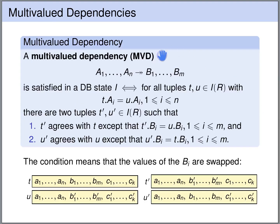In general, a multivalued dependency takes the following shape. We can have a set of attributes on the left and a set of attributes on the right. So we have attributes A1 up to AN on the left, and attributes B1 up to BM on the right. And let's say that the relation also has some other attributes C1 up to CK. Such a multivalued dependency holds in database state I if and only if for all tuples T and U in the relation R associated by state I.